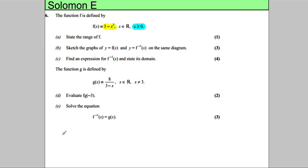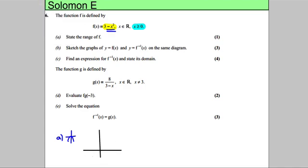This graph is a quadratic. It's a negative x squared, so it's going to be an n-shape, and it's shifted 3 units up from the origin. So it's going to look something like this, where that point is 3.